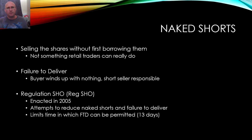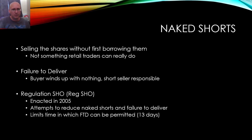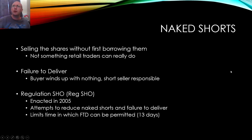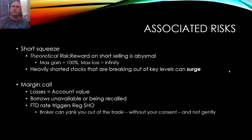Naked shorting was more prevalent back in the day, but around 2005 the SEC enacted something called Regulation SHO — they're trying to reduce naked shorts and the failure-to-deliver problem. What it does is limit the time during which failure to deliver can be permitted. If there's a failure to deliver and that period lasts 13 days, the broker becomes responsible for settlement. It's an interesting piece of history, but retail traders don't need to worry too much about it.